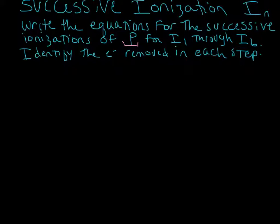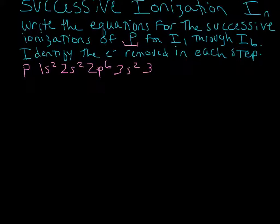To begin, let's go ahead and write the electron configuration for phosphorus: 1s², 2s², 2p⁶, 3s², and 3p³. We're going to use this to identify the electron removed in each one of the steps that we write out for these successive ionizations.